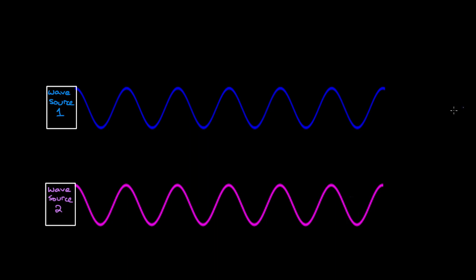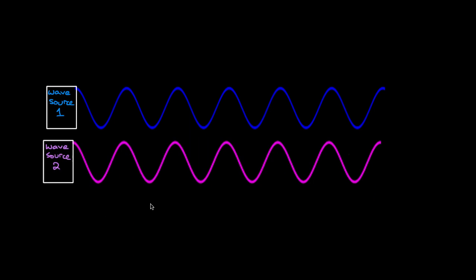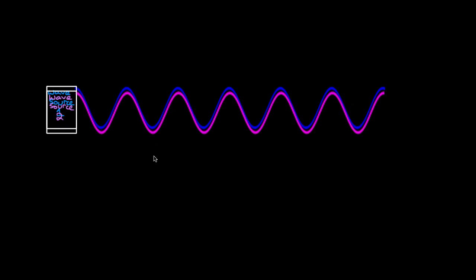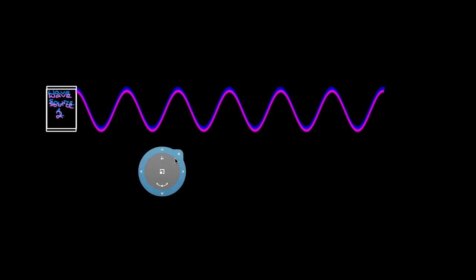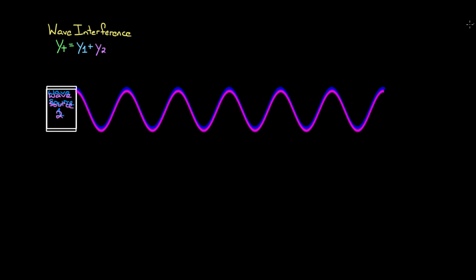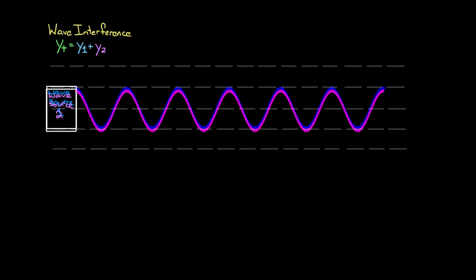Now let's say you've got a second wave source. If we take this second wave source and put it basically right on top of the first one, we're gonna get wave interference, because wave interference happens when two waves overlap. If we want to know what the total wave's gonna look like, we add up the contributions from each wave.